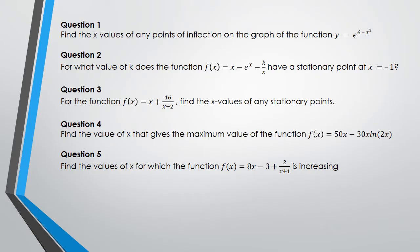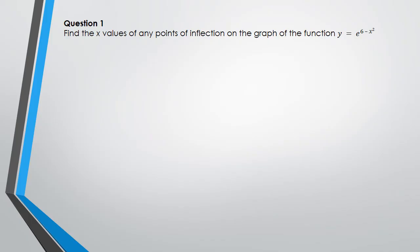Okay, assuming you've done the five questions, let's start with question one. Question one says: find the x values of any points of inflection on the graph of the equation y equals e to the power of 6 minus x squared. For points of inflection, remember that f double dash of x is equal to 0, so you've got to work out f double dash of x. First step: f of x is e to the power of 6 minus x squared.